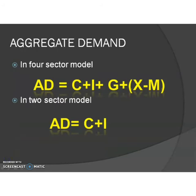Aggregate demand is equal to consumption demand plus investment demand. In the four-sector model, aggregate demand AD = C + I + G + (X − M). Aggregate demand is mainly determined by these four factors.